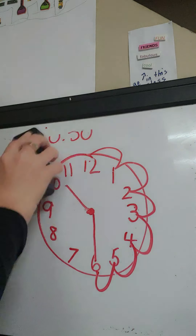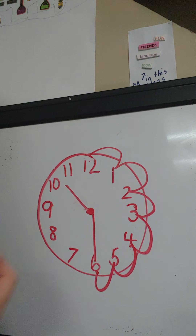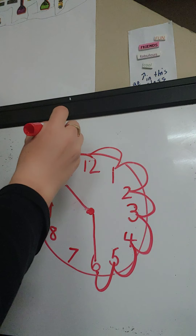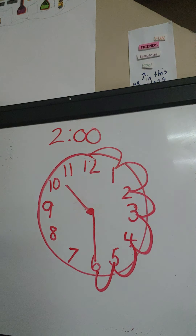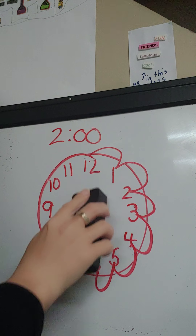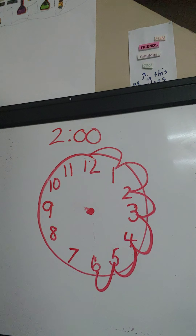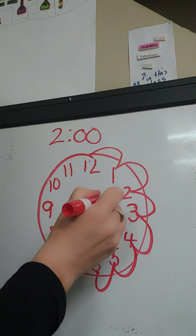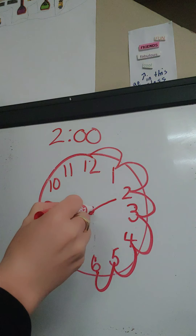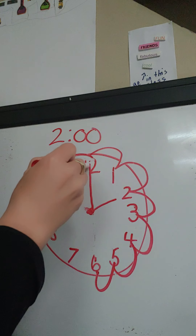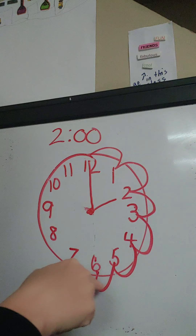I'm going to change my digital clock. Now I want it to say 2 o'clock — 2 is the hour, then 00. Where is my hour hand going to go? It's going to point directly at the 2, my little short hour hand. Where is my long minute hand going to go? Right up by the 12, pointing right to the 12.